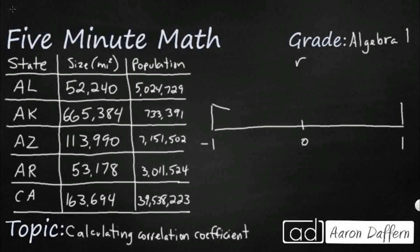The closer you get to 0, the weaker or non-existent the correlation is. If you have a correlation right around 0, there's going to be no correlation. If you get a negative 1 or a positive 1, it's going to be a perfect correlation.